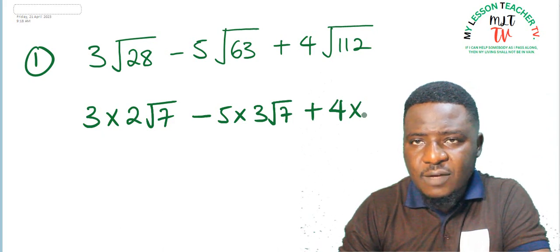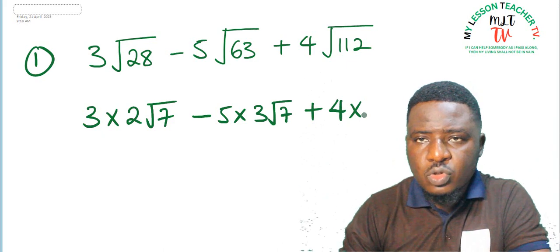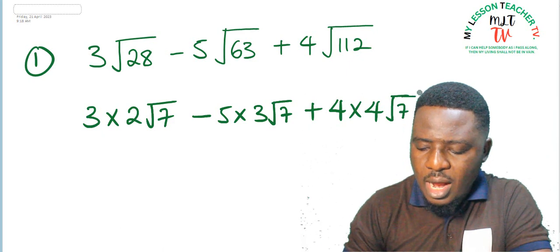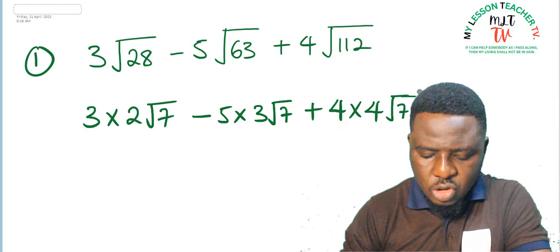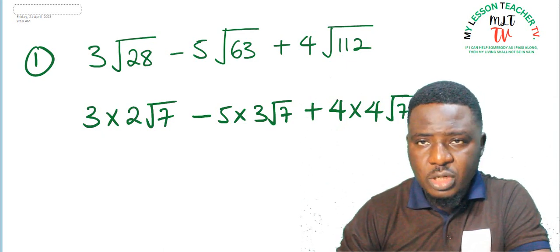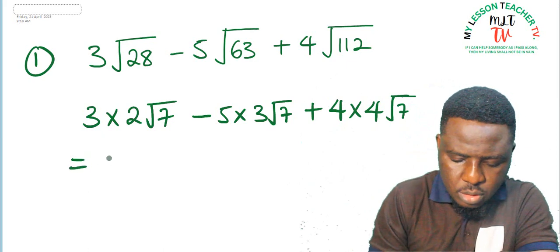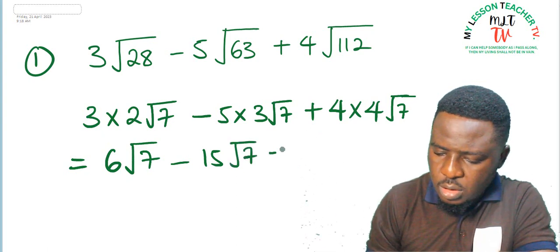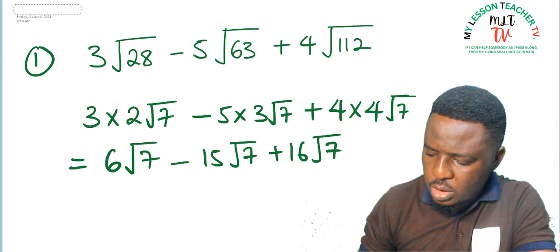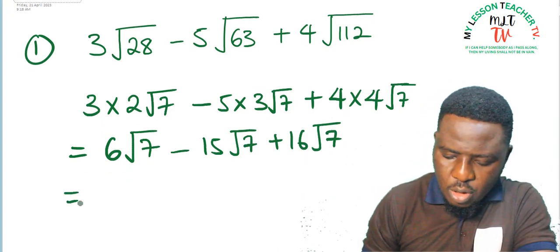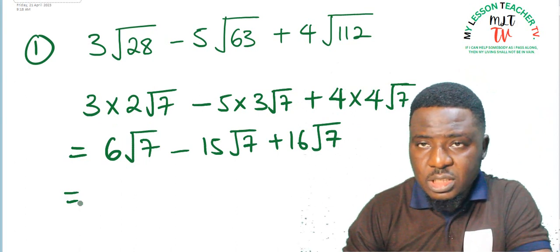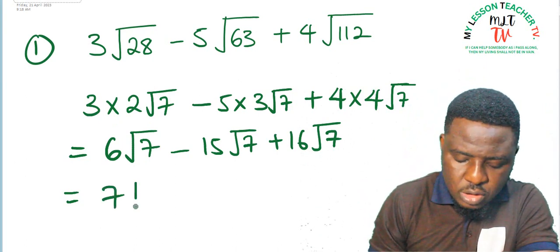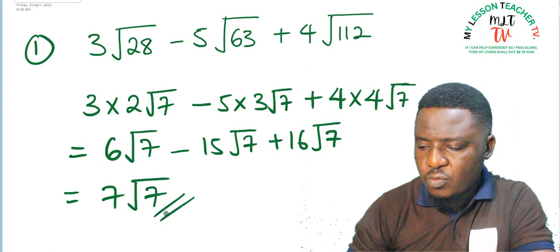112 can be expressed as 7 times 16, and 16 is the perfect square. Square root of 16 is 4, so this becomes 4 root 7. This gives us 6 root 7 minus 15 root 7 plus 16 root 7. When you simplify: minus 15 root 7 plus 16 root 7 gives 1 root 7, plus 6 root 7 gives 7 root 7. So your answer to this particular question is 7 root 7.